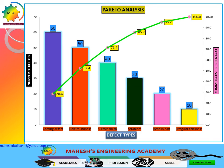Parts got rejected due to irregular thickness 10 times. A parallel line is drawn at 80%, and a vertical line at the intersection. The vital causes identified are coating defects, hole roundness, and surface finish — these three defects are contributing to 80% of the problems.